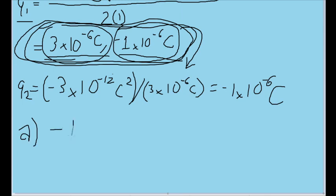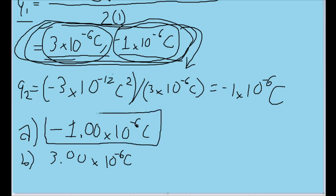So part A, the negative charge is negative 1.00 times 10 to the negative six Coulombs, and this is rounding to three significant figures. This is why you'd want to preserve your full values in the calculator earlier. And part B, the positive charge is equal to 3.00 times 10 to the power of negative six Coulombs. These are our values for both of the charges in their initial states.